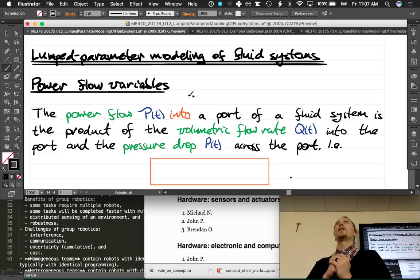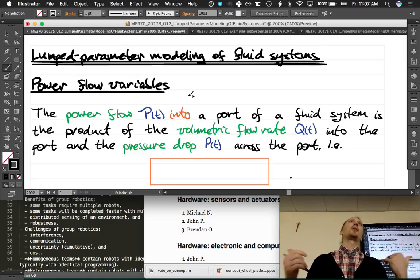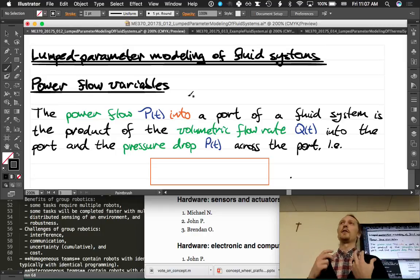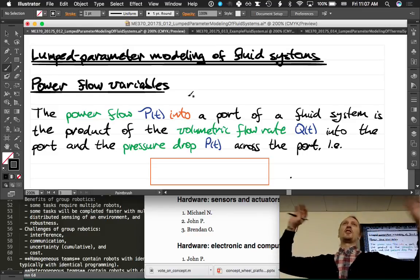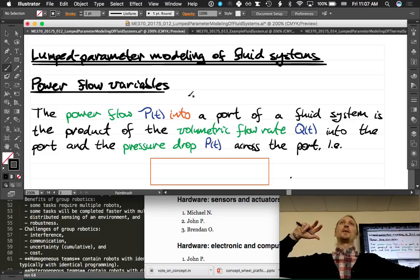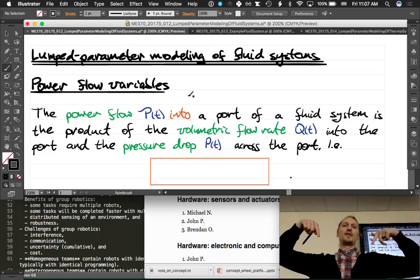Turns out, though, that you can do a lot of lumped parameter fluid modeling and get away with it. If you care about the details of how the fluid is flowing around a shape, you need fluid dynamics. But if you just care about how much water is in each tank, given the different pumps that you have and the flow rates, you can use this stuff.